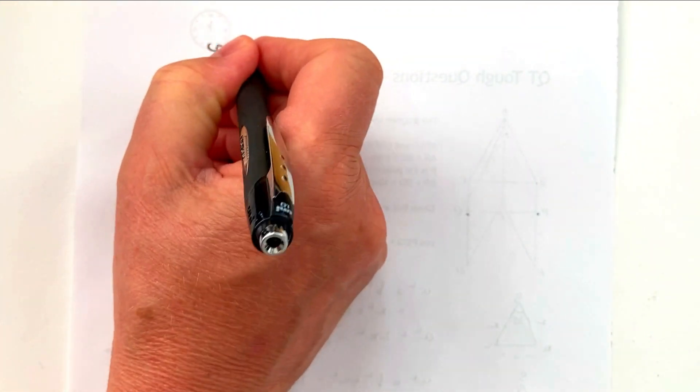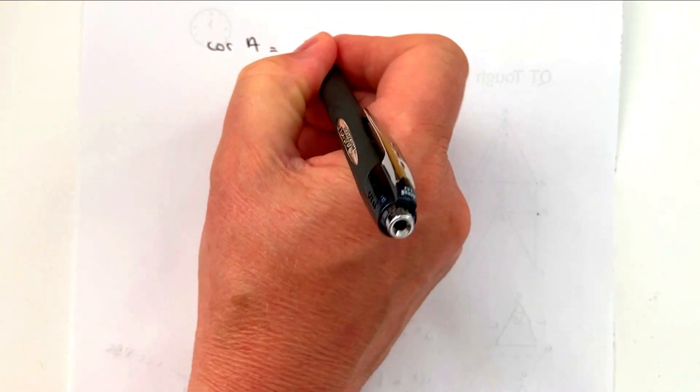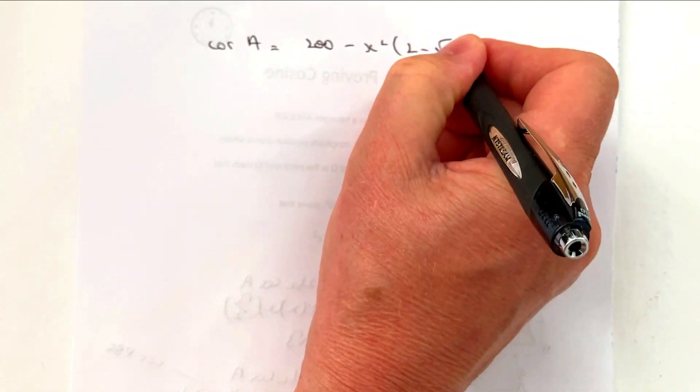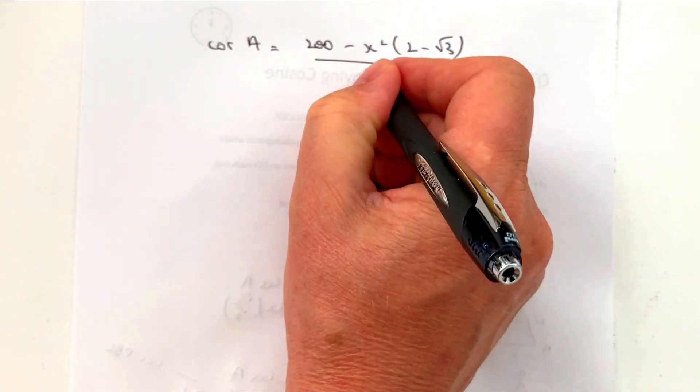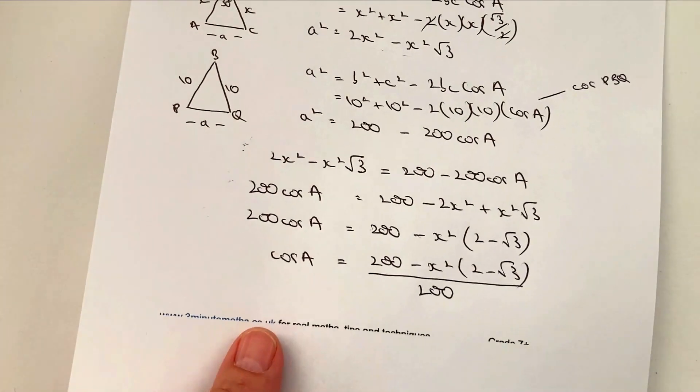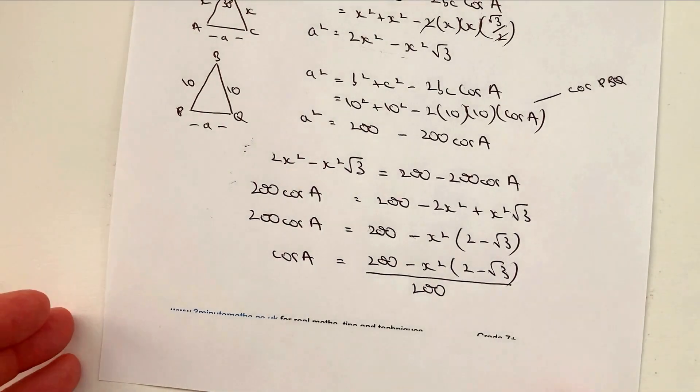Okay, so I've got cosine A equals 200 minus x squared 2 minus root 3, all divided by 200. That's exactly the same as it was on the previous bottom of the page is this one here. Okay, so hopefully that's okay for you. So let's now look at how we can change this to make it look like our question.